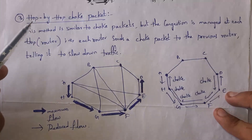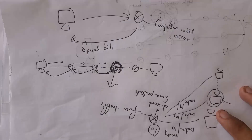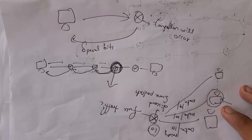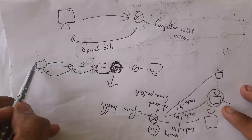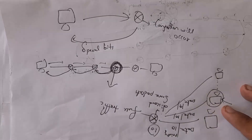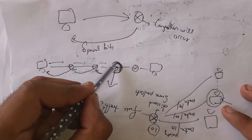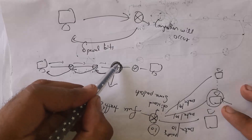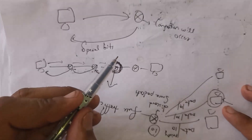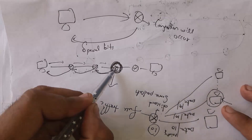The third method is hop-by-hop choke packet. A hop is nothing but a router. In hop-by-hop choke packet, whenever congestion occurs at a particular router, that router informs its connected router. For example, if a computer wants to send data to another computer and congestion occurs at router D, router D will send a choke packet to the previous router, and similarly that router will send a choke packet back toward the source computer.